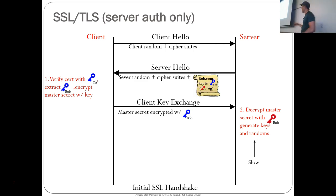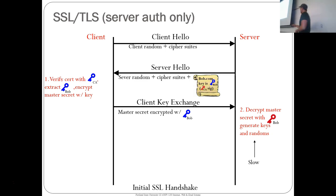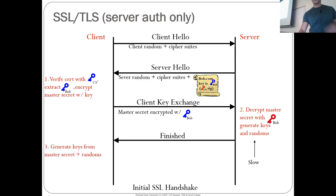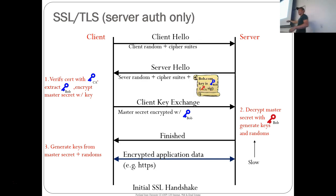The server decrypts the master secret the client sent using its private key — this is the slow, expensive operation on the server, which is why for a while people weren't deploying HTTPS, as it could be a denial-of-service vector if the server was bogged down with many of these operations. After that exchange, you've bootstrapped a symmetric key for the rest of the communication. The result is the lock you see when you hit a secure site. The lock means there's a TLS connection going on underneath.